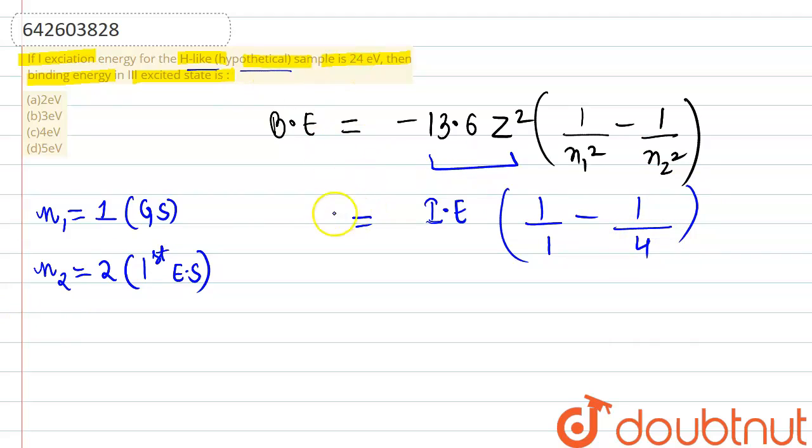Binding energy is given as 24 electron volt, we will put the value. On solving from here and taking the LCM, we will get ionization multiplied by 3 divided by 4. From here ionization energy comes out to be equal to 24 multiplied by 4 by 3, this is 32 electron volt.